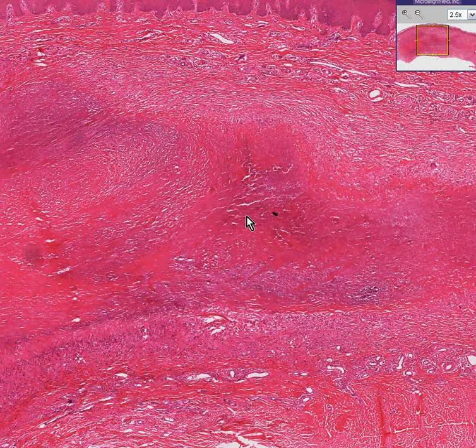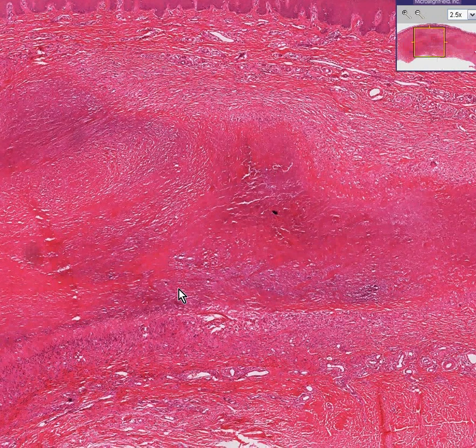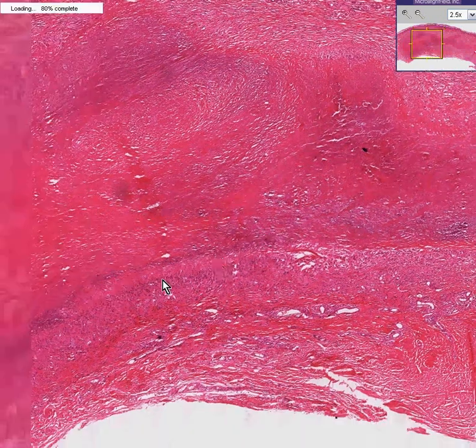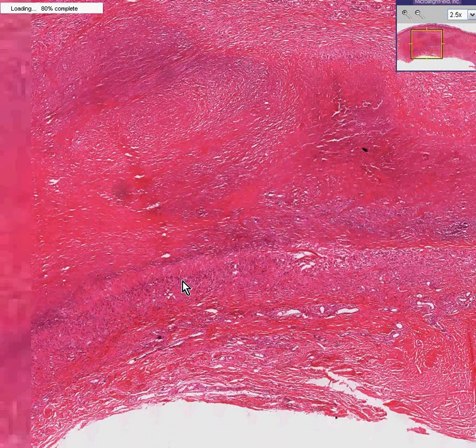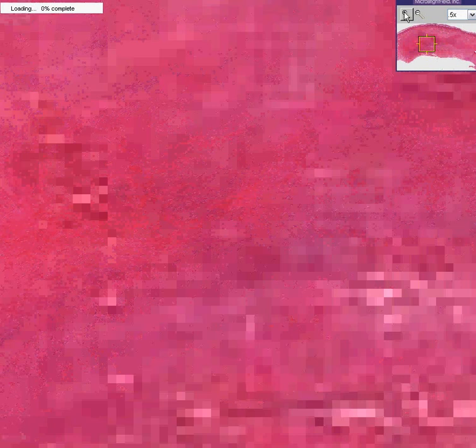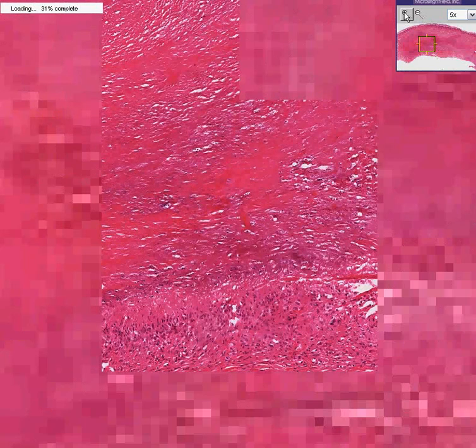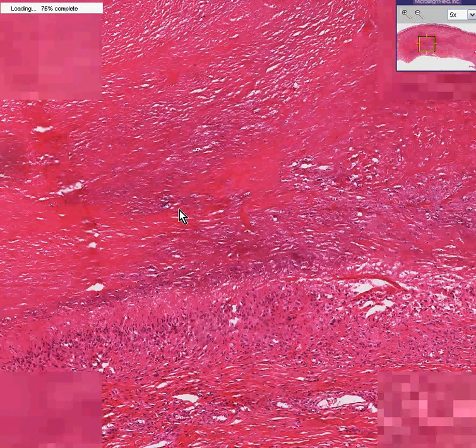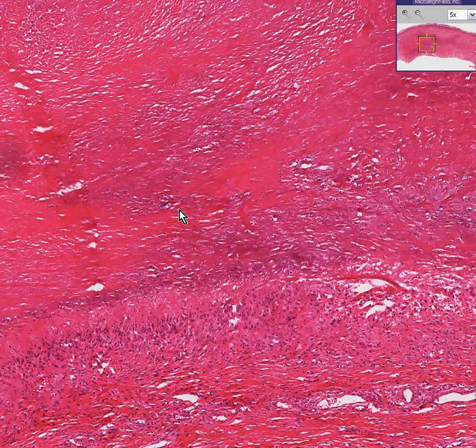It also may have some scar tissue in it and it also seems to be rimmed peripherally by inflammatory cells, chiefly lymphocytes. If you are thinking that this is reminiscent of a granuloma, I think you could, we could say you're probably correct. This is like a granuloma.